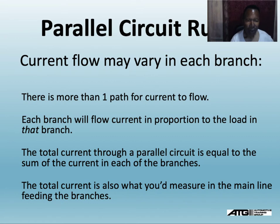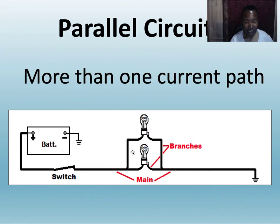Here's another rule: current flow may vary in each branch. There is more than one path for current to flow, and each branch will flow current in proportion to the load of that branch — meaning the resistance. The resistance will determine the current, like I said earlier. This could be one resistor value and this could be another, and that resistance determines how much current flows through that circuit.